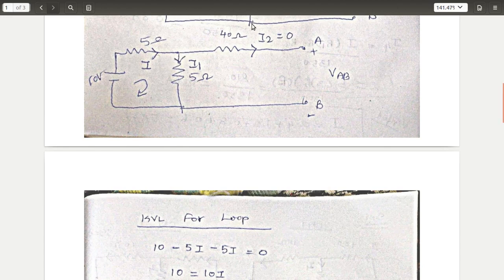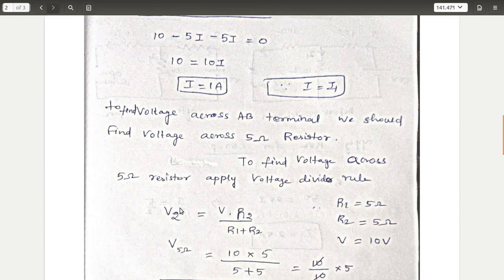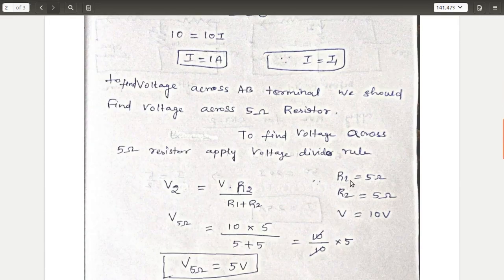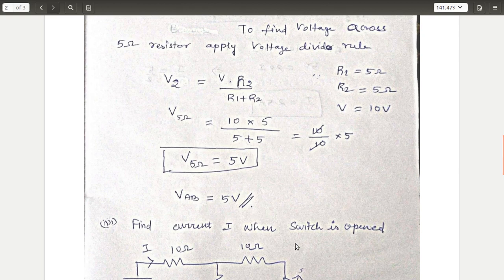Now apply the voltage divider rule to find the voltage across the 5 ohm resistor. Taking R1 = 5 ohm and R2 = 5 ohm with a total voltage of 10V, substitute into the formula. The voltage across R2 (5 ohm) equals VAB. Since R1 and R2 are equal, V1 = V2 = 5V. If the resistors were different, you would get different answers, so be clear about the voltage divider rule.